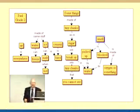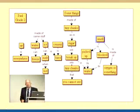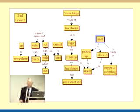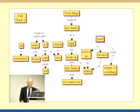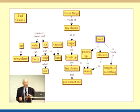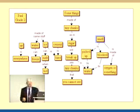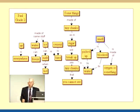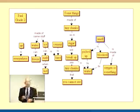Here we see in this map that this child has some knowledge about water and ice and knows that they're made of the same things, but there's also some knowledge that's not well connected and some ideas that are missing.